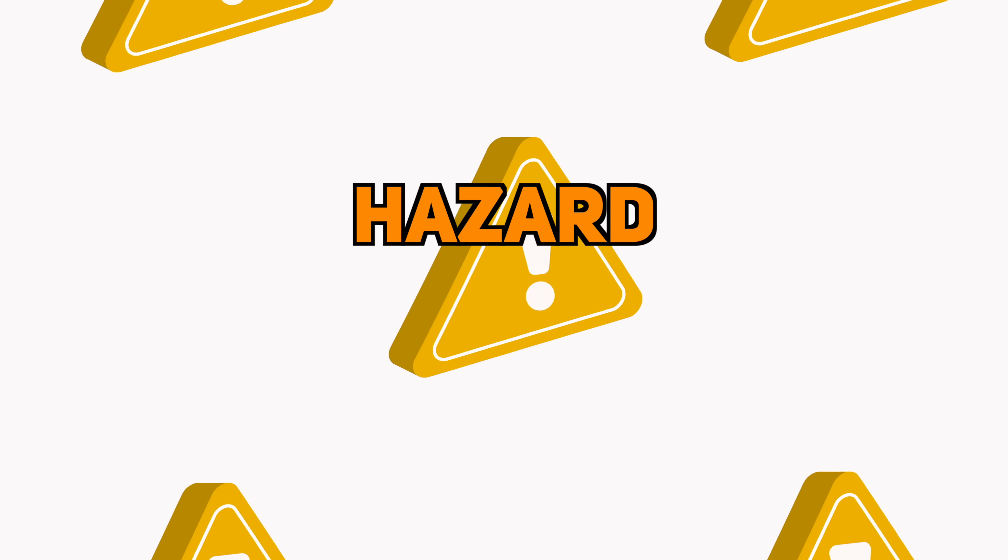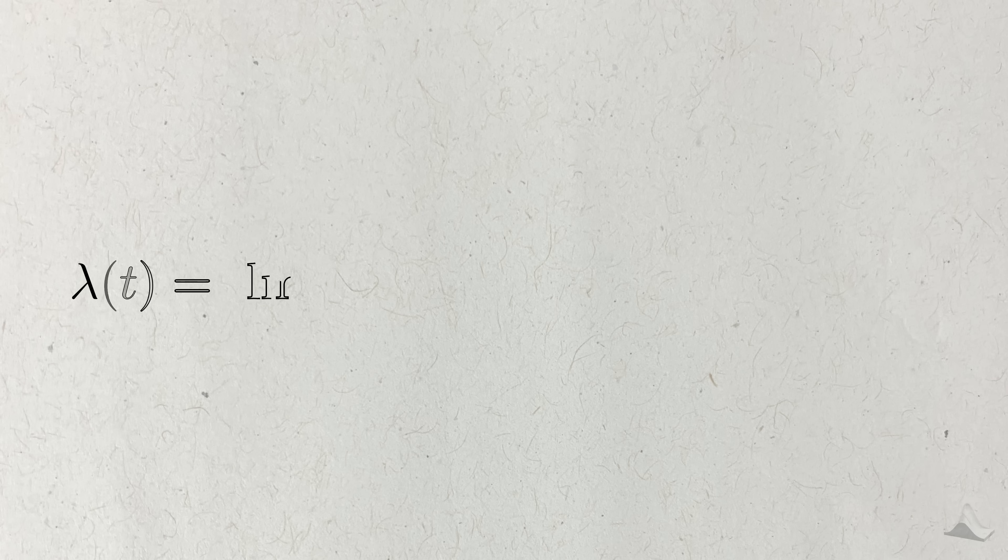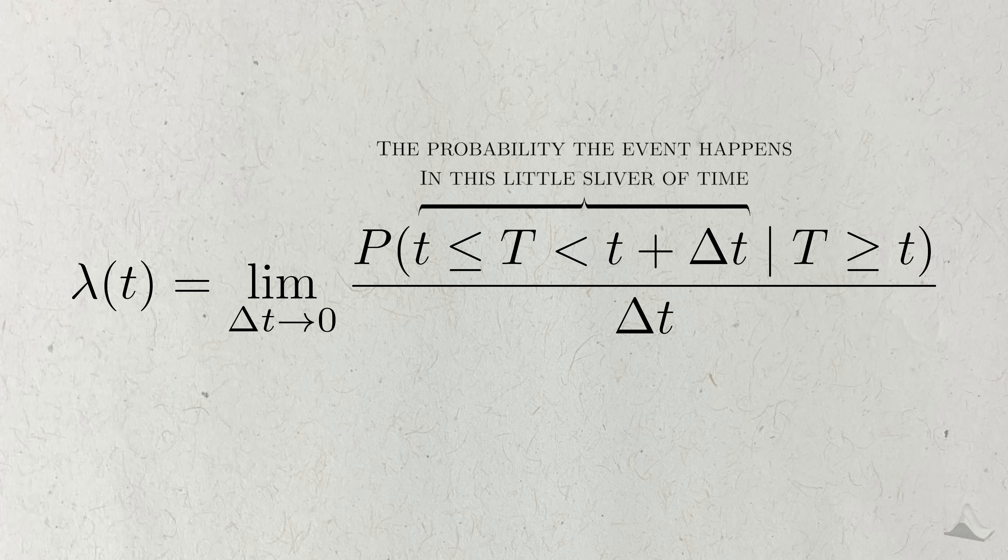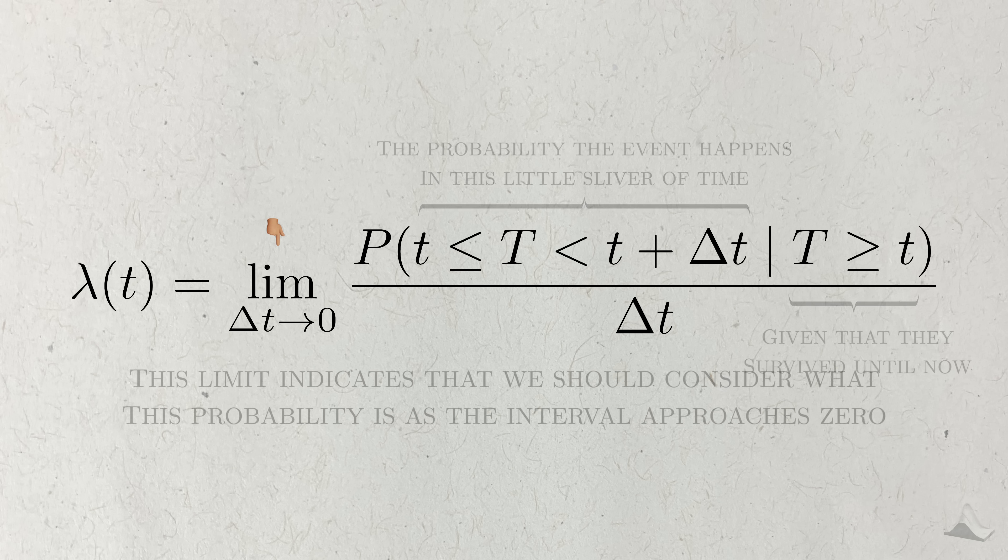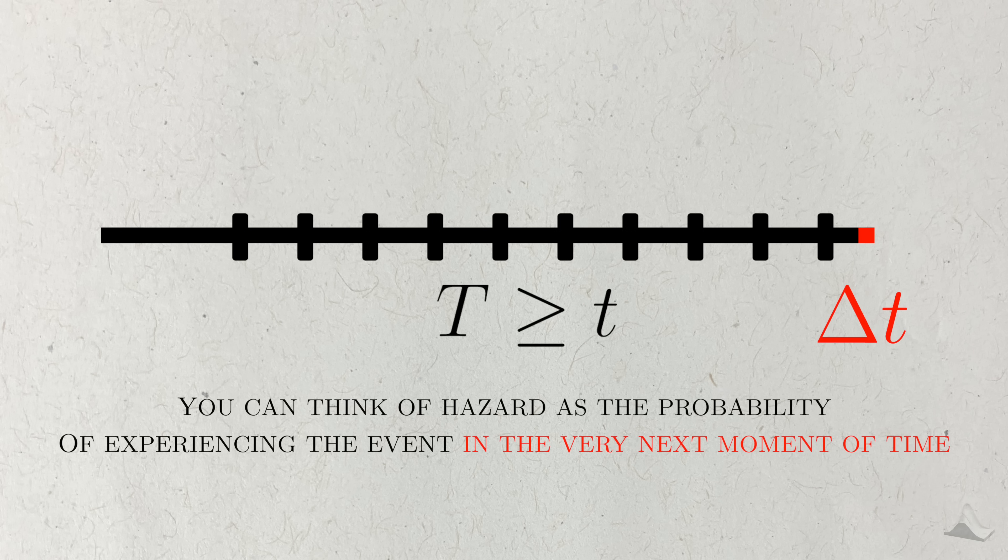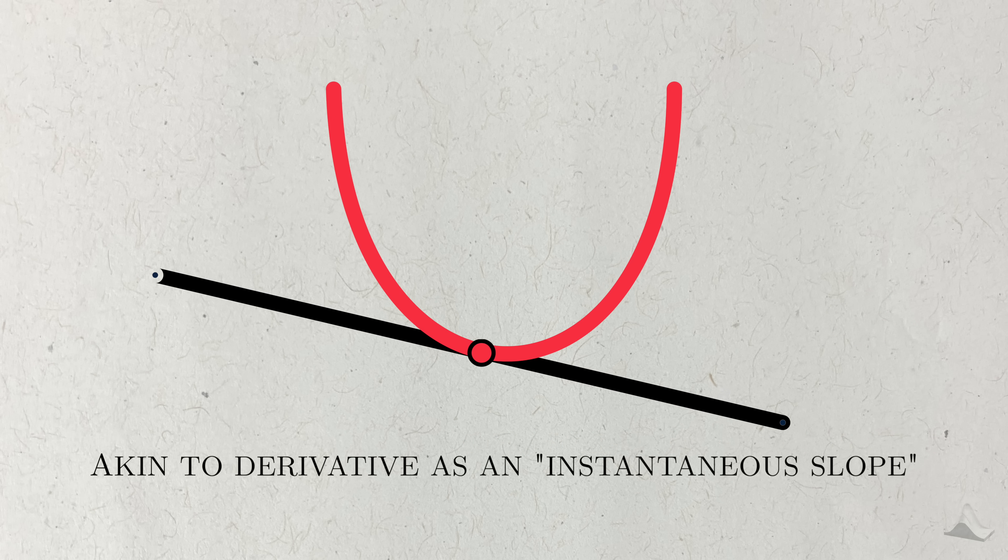I'll denote hazard as lambda and show you how it's defined in math terms. It's a lot to take in, so I'll break it down slowly. For some small change in time delta t, the hazard at time t is the probability that the event will happen within this small period of time, given that this person has survived up until this point. This limit here indicates that the interval should approach zero. So you can think of hazard as the probability of experiencing the event in the very next instant of time, kind of like instantaneous failure rate, akin to how the derivative is an instantaneous slope for a given function.